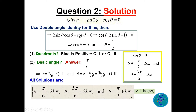We cannot divide both sides by cosine theta because that would lose solutions. Instead, factor out cosine theta: cosine theta times (2 sine theta minus 1) equals zero. So cosine theta equals zero or sine theta equals one half. For cosine theta equal zero, theta is pi/2 plus k*pi, which covers both 90° and 270° solutions.